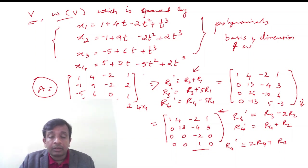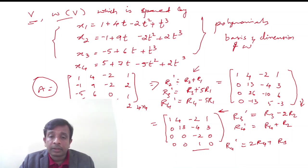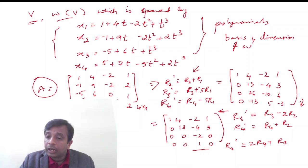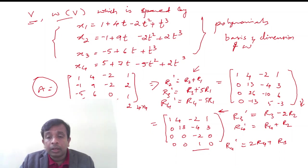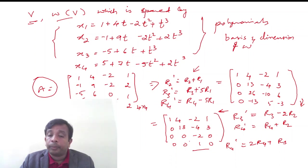We perform row operations: R2' = R2 + R1, R3' = R3 + 5R1, R4' = R4 − 5R1, and further R3' = R3 − 2R2 and R4' = R4 + R2. This results in the echelon form matrix: [1,4,−2,1; 0,13,−4,3; 0,0,−2,0; 0,0,1,0].